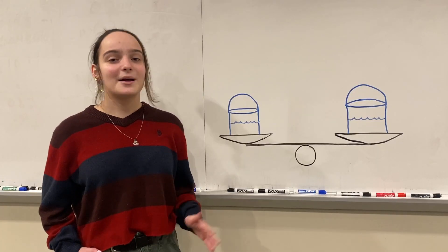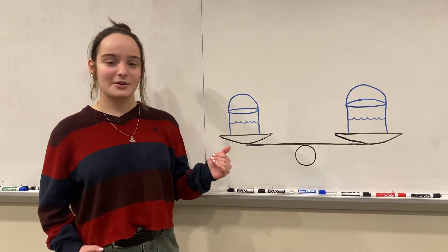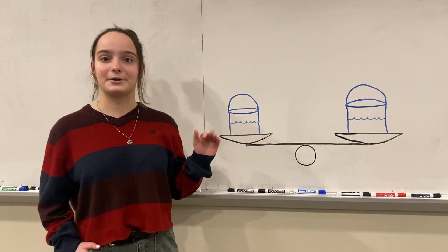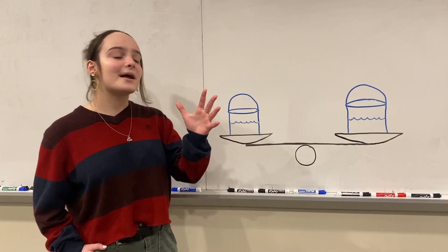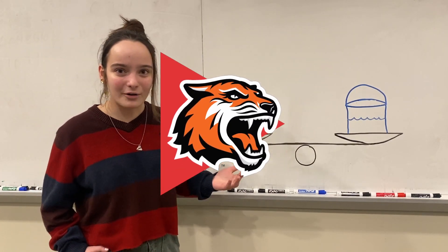During Hank and John Green's podcast, episode 304, they were asked to consider a pan balance. On each side of the scale, there's a bucket halfway filled with water, so the scale is balanced. If I take my hand and put it into one of the buckets, which way will the scale tip? Will it move at all?